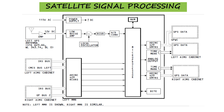The left and right MMR send position and time mark data to the left and right AIMS cabinet. The GPSSUS also sends position data to the ground proximity warning computer. The GPWC uses this data in its Terrain Awareness and Terrain Clearance Floor functions.